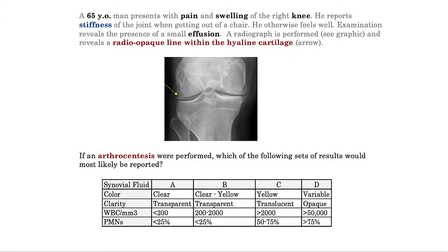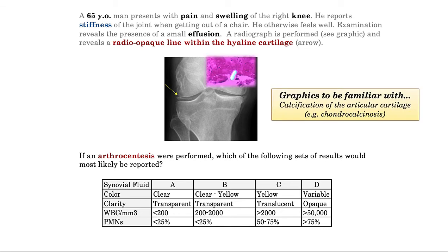Let's move on to the next question. Here we have an older patient with pain and swelling in the knee; stiffness is reported. I will caution you that stiffness is thrown in to make you think osteoarthritis or rheumatoid arthritis — always interpret stiffness in the context of the vignette. They go on to describe an effusion, then give a graphic pointing to an abnormality described as a radio-opaque line within the hyaline cartilage. That radio-opaque line represents deposition of calcium pyrophosphate crystals within the hyaline cartilage, and I would suggest you be familiar with both the graphic and radiographic description. They are both classic for CPPD, which may also be referred to as chondrocalcinosis.